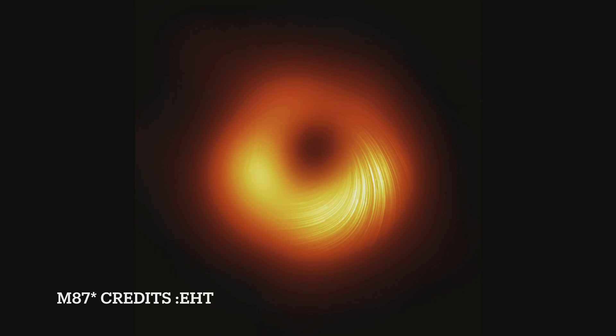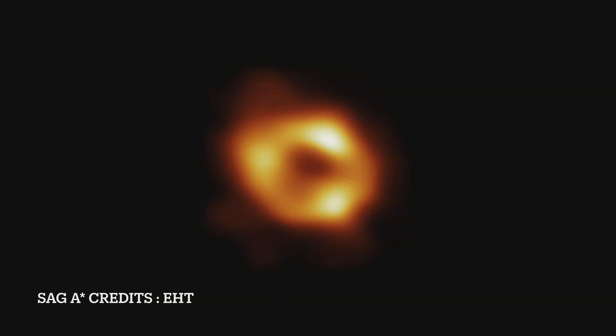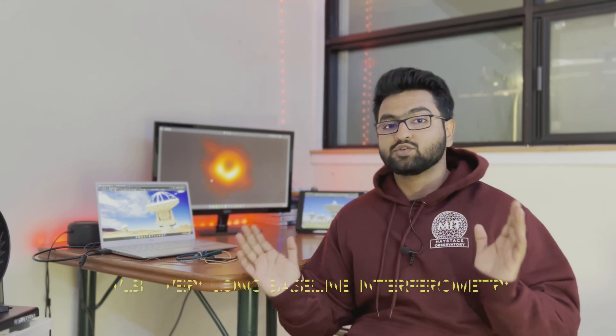By now I'm sure all of you must have seen the pictures of the black hole, both the M87 star and the Sagittarius A star that had been published by the EHT. In this video I'm going to talk about the technique through which you can take such photos of the black hole, and this technique is called VLBI or Very Long Baseline Interferometry.